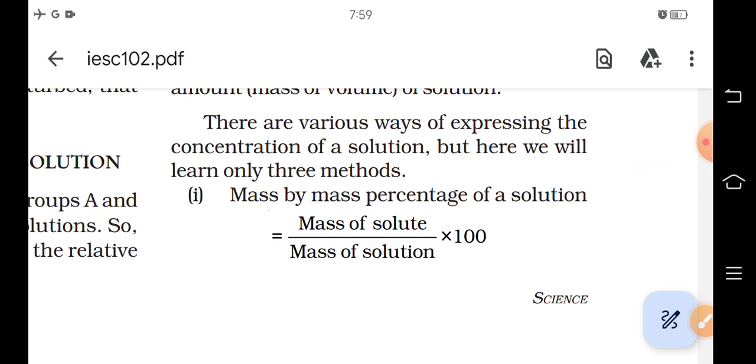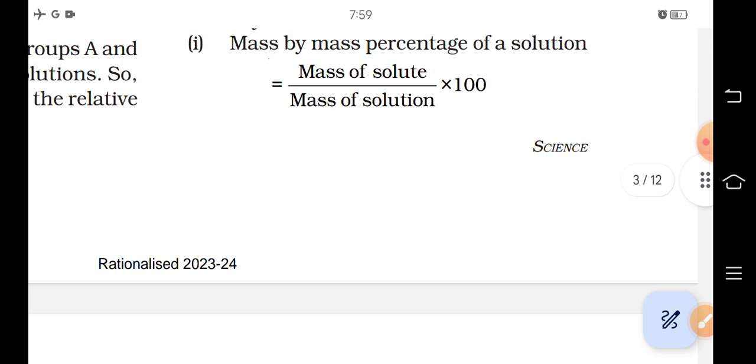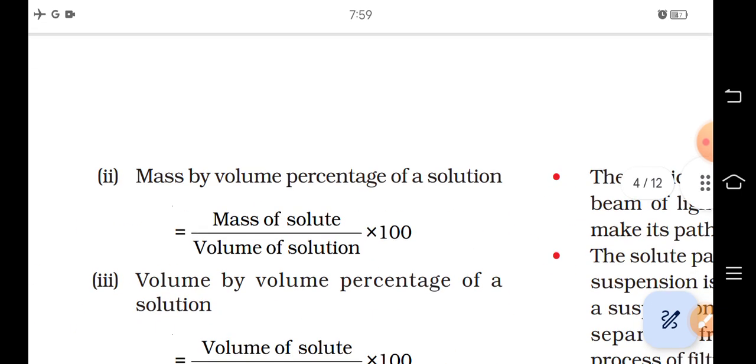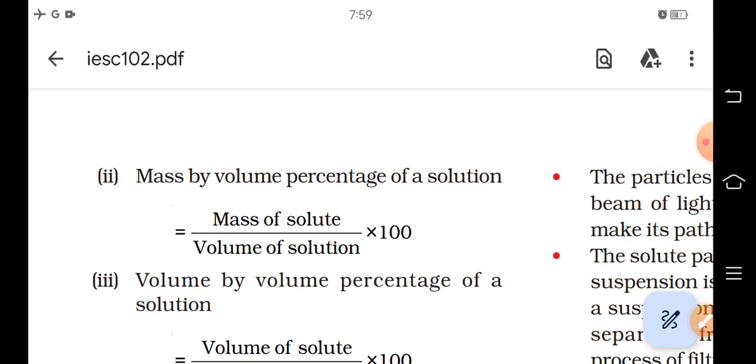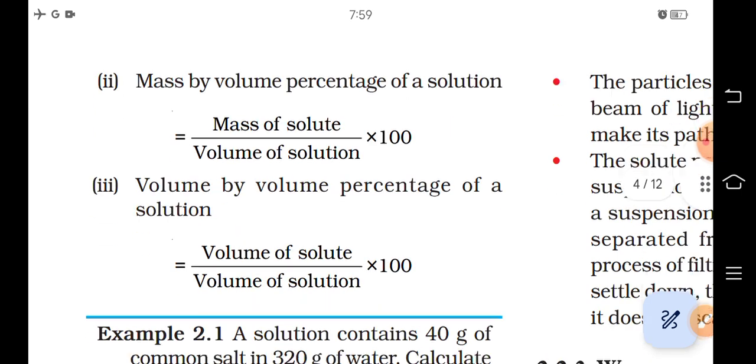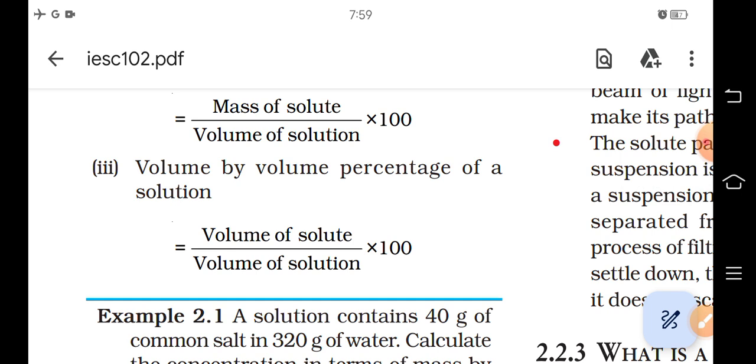First, mass by mass percentage of a solution equals mass of solute upon mass of solution into 100. Second, mass by volume percentage of a solution equals mass of solute upon volume of solution into 100. Third, volume by volume percentage of a solution equals volume of solute upon volume of solution into 100.